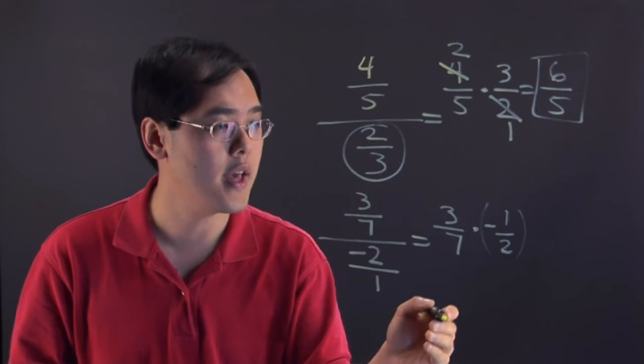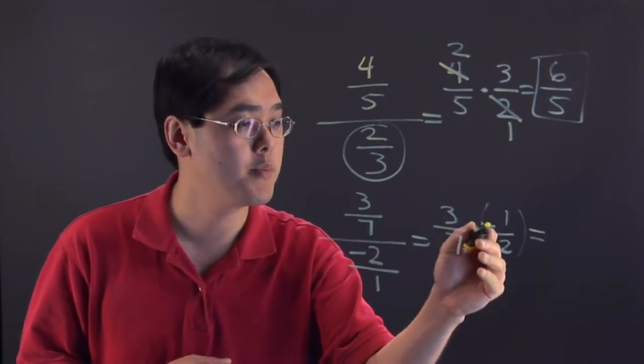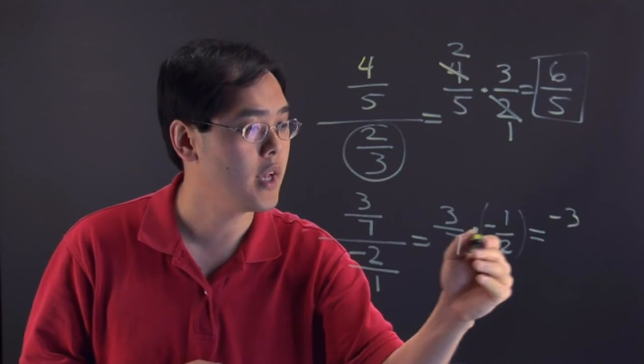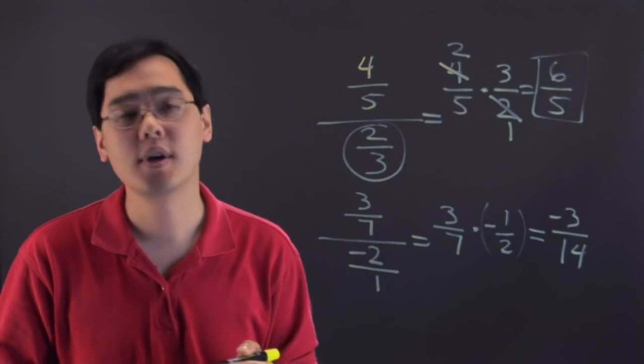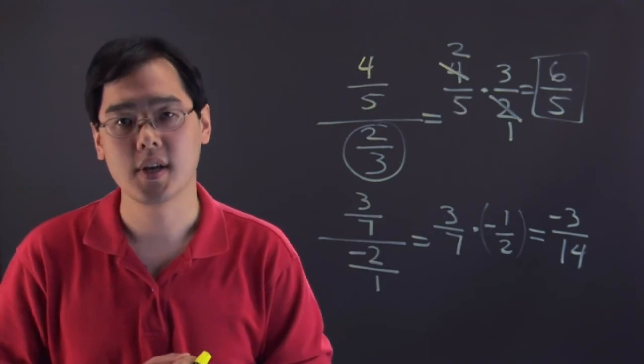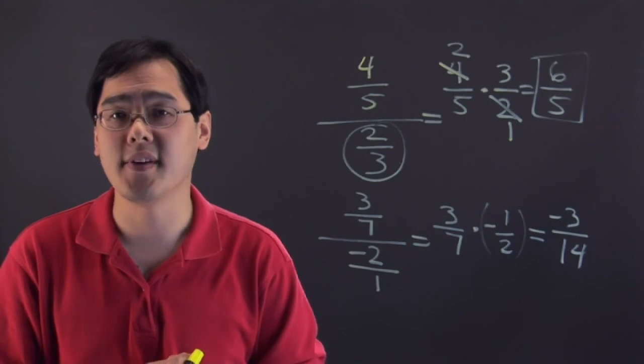And then just go ahead and multiply across if you like. 3 times negative 1 is negative 3, and 7 times 2 is going to give you 14. So 3 sevenths divided by negative 2 is going to be negative 3 fourteenths. So I'm Jimmy Chang, and that's a couple of examples on questions on dividing fractions.